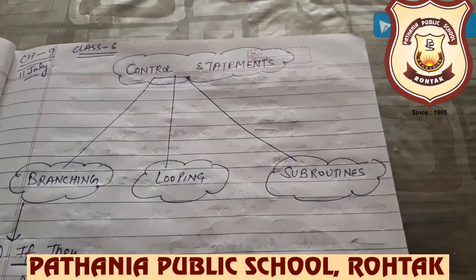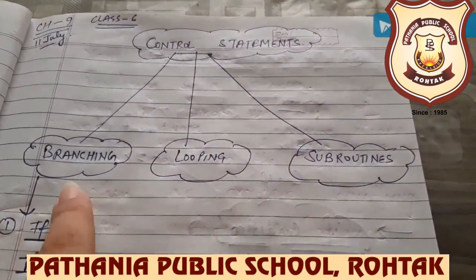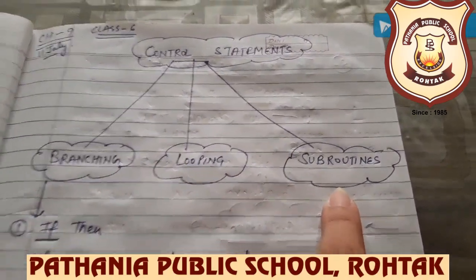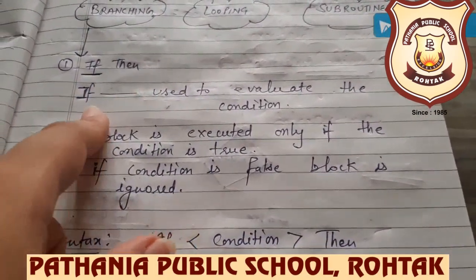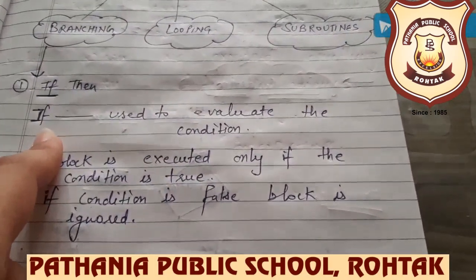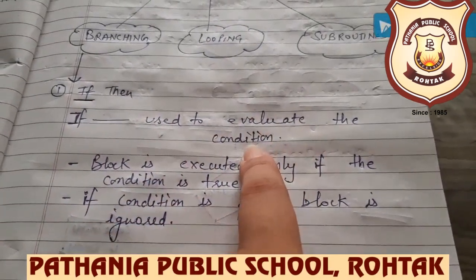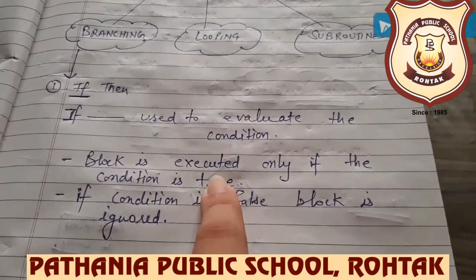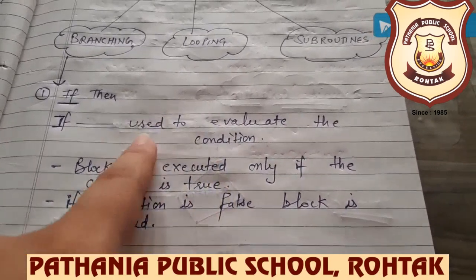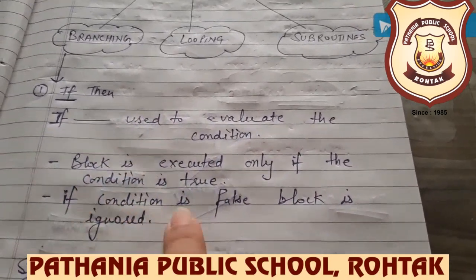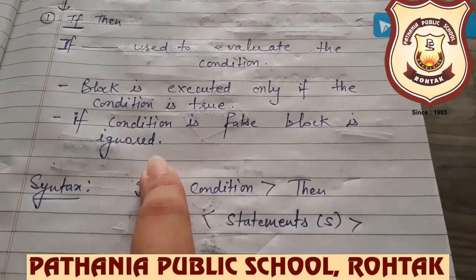Control statements should be categorized into three types: branching, looping, and subroutines. The first one is if-then. The keyword 'if' is a reserved keyword which has a specific predefined meaning. It is used to evaluate the condition. The block means the program is executed only if the condition is true. If the condition is false, the block is ignored and the execution of the statement is blocked.